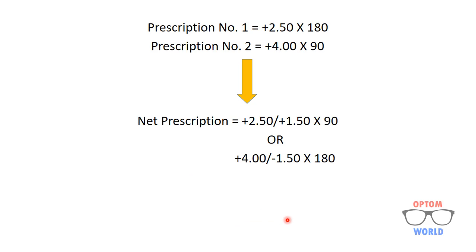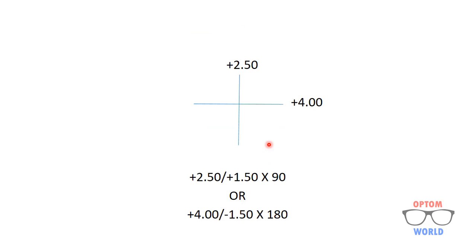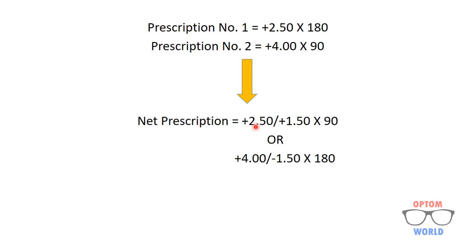If instead we consider plus four as the sphere, the difference between the two is still one point five zero, but this time we are moving towards the less positive side, so the cylinder sign is minus and the axis is 180. Therefore the net prescription can be written as plus two point five zero sphere with plus one point five zero cylinder at 90 axis, or plus four sphere with minus one point five zero cylinder at 180 axis.